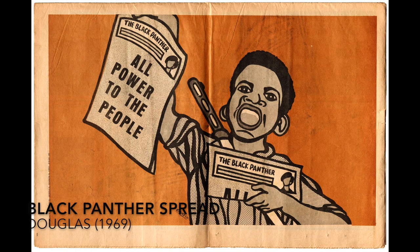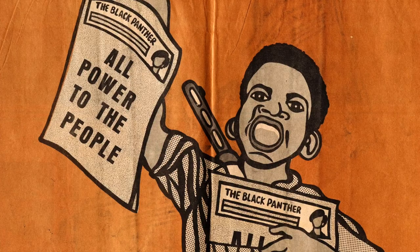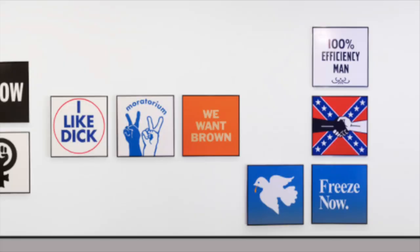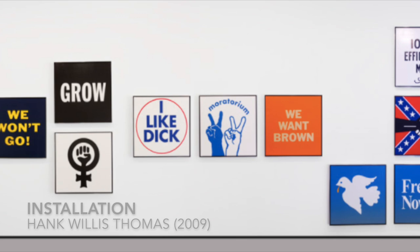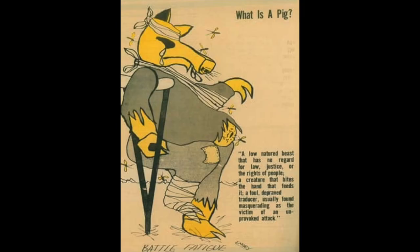Grounded in historical cultural movements, the aesthetics of black radicalism and protest were adopted and developed by Emory Douglas, whose prints, paintings, and newspapers were intended for mass distribution, and Hank Willis Thomas, whose paintings and sculptures are displayed in institutional spaces like museums and galleries. Because of the vastly different intended audiences and historical contexts of these artists' work, these aesthetics function quite differently, while still serving as calls to action against white supremacy, capitalism, and imperialism.